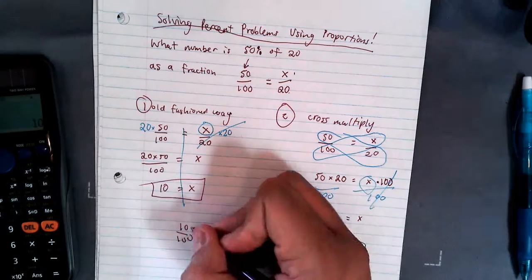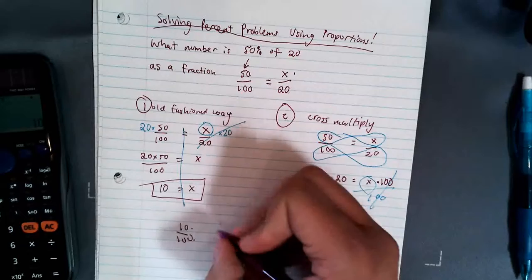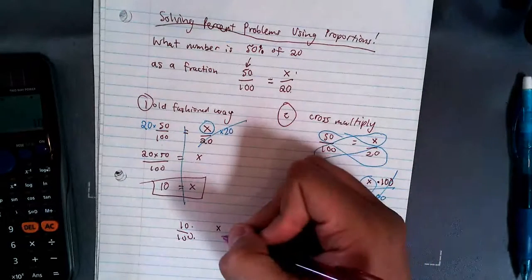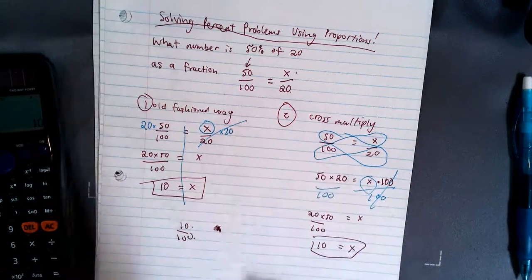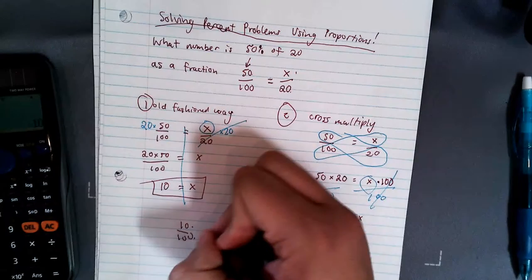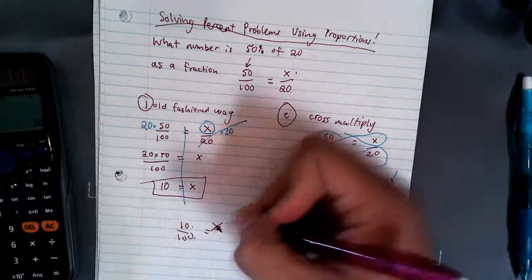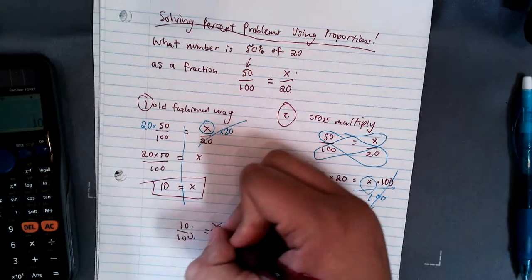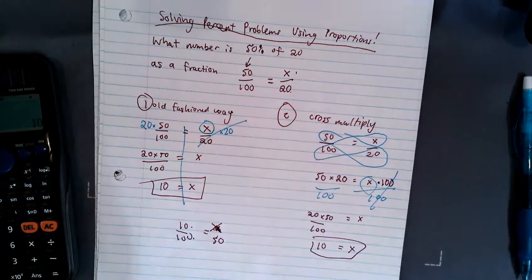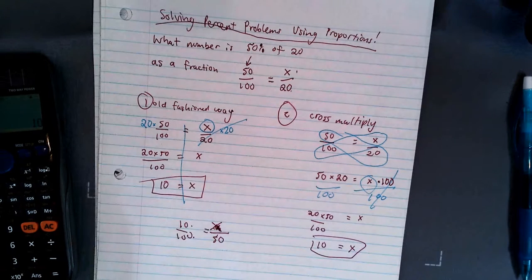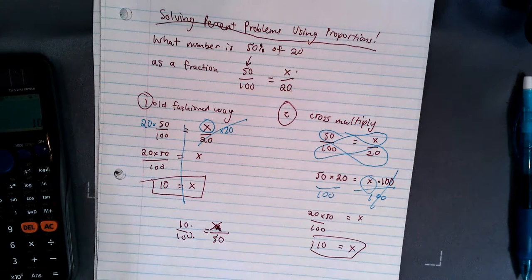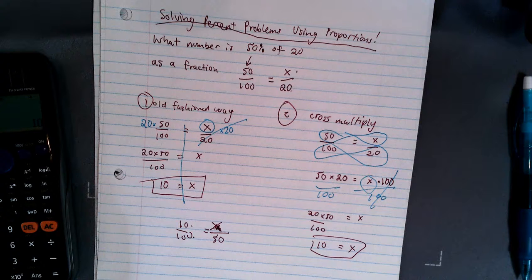So 10% of 50. Well, 10% of 100, something percent. Something out of 50. 10 out of 100, something out of 50. All right, so make sure you pay close attention when you're setting those up.